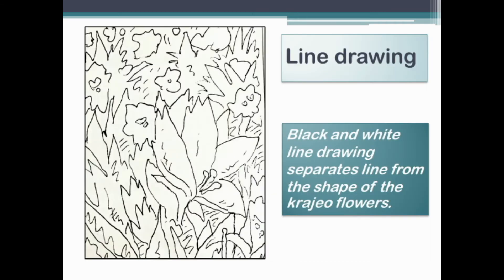The first technique is line drawing. This black and white line drawing separates the line from the shape of the kratiao flower. The strong lines formed by a pencil or pen show the rhythm and position of the flowers. Line drawing allows us to see position and rhythm more clearly and illustrates the beautiful grace of nature.